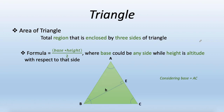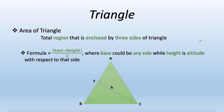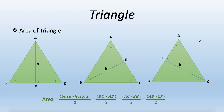If I consider AC as base, the height is BE, the perpendicular from vertex B to AC, so area equals AC times BE divided by two. If AB is the base, the height is CF, the perpendicular from vertex C to AB, giving area equals AB times CF divided by two. All three expressions are equal — you can find the area from any base, but always use the perpendicular height corresponding to that base.